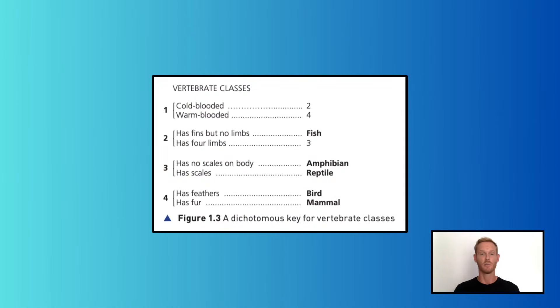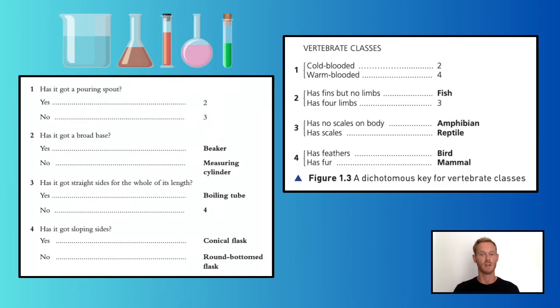All we need to do is reformat it so it's less of a flowchart and more of a series of questions. Here's another example of a dichotomous key that can be used to identify laboratory glassware. Pause the video and familiarise yourself.